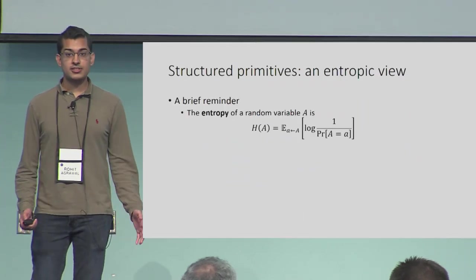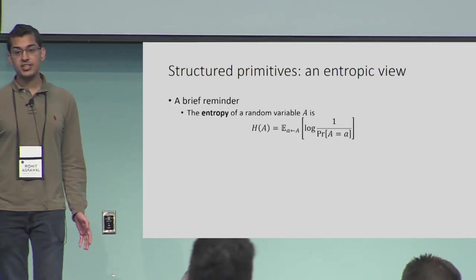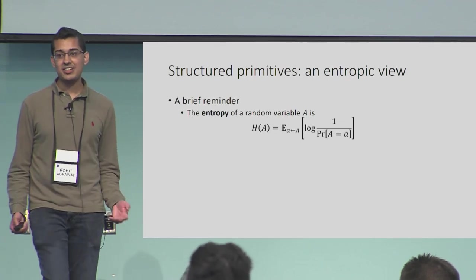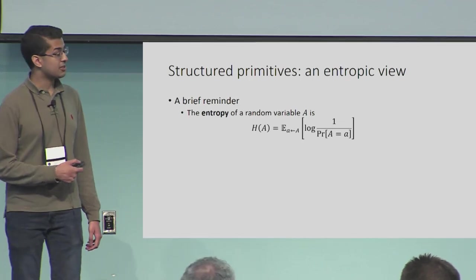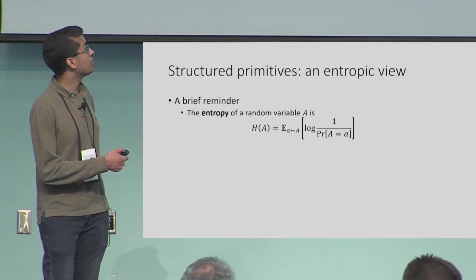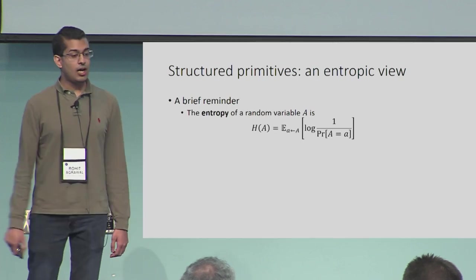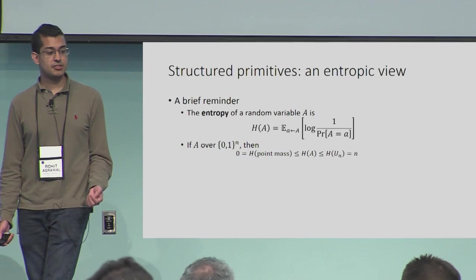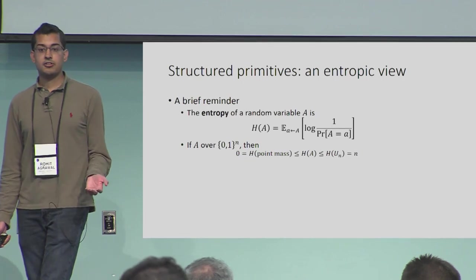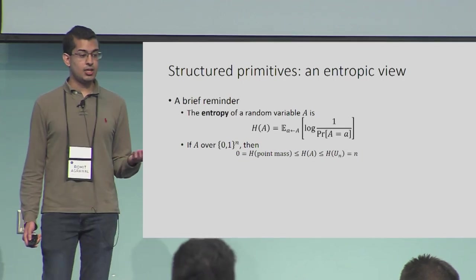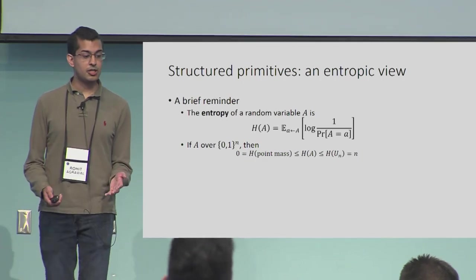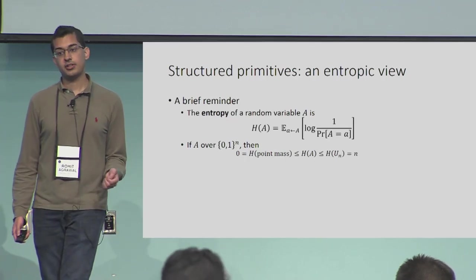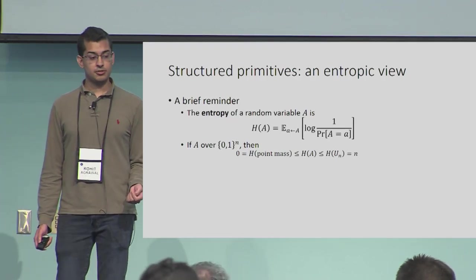First, a brief reminder in the information-theoretic setting: what is entropy? The Shannon entropy of a random variable A is just the expected surprise, the expected log one over the probability. The only thing we need to know is that for an n-bit string, the entropy of a random variable A is between zero — in the case that A is just a point mass — and n, where A is the uniform distribution over all n-bit strings.